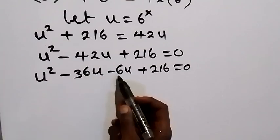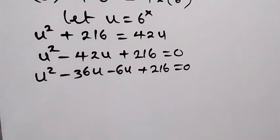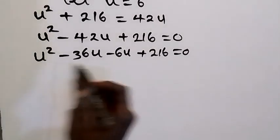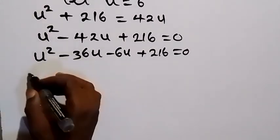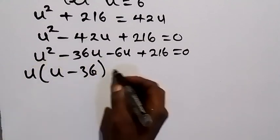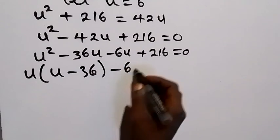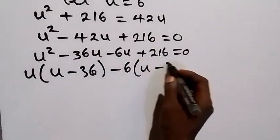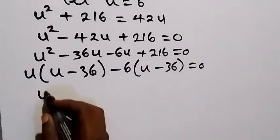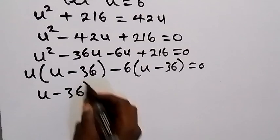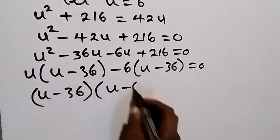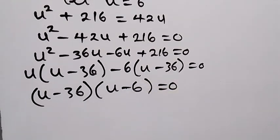Here, minus 36u minus 6u gives minus 42u. We group and factor: u is common in the first group giving u(u minus 36), and minus 6 is common in the second group giving minus 6(u minus 36). So (u minus 36) is common, leaving us with (u minus 36)(u minus 6) equals 0.